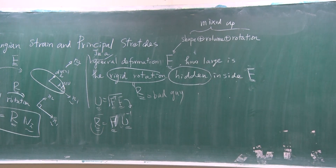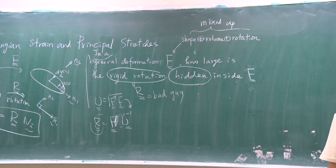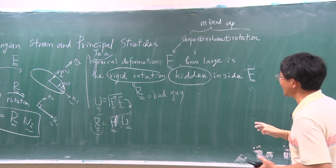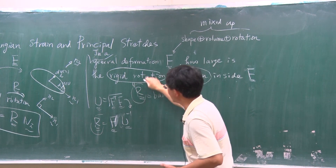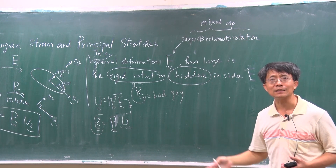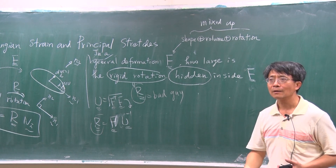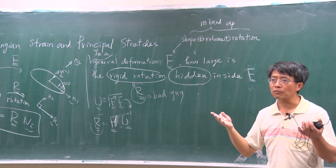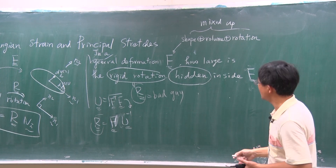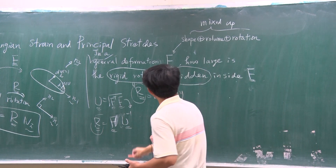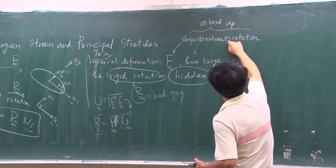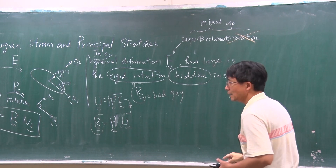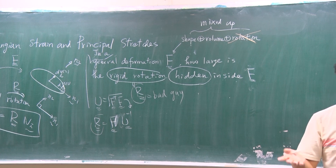Since R is a bad guy, we want to get rid of it. If we delete this part from F, then we get the pure deformation. This is the main idea: we first identify who is the bad guy — we have already done it. The second step is we want to cut it off. The thing that remains will be the pure deformation. We have shape changes and volume changes and rotation; we want to cancel the rotation out, and then we get the real measure of deformation.